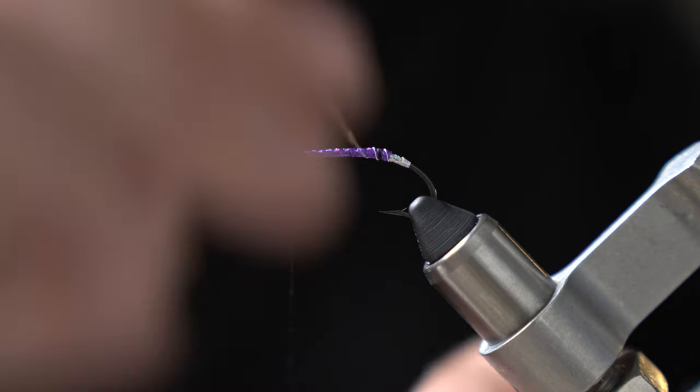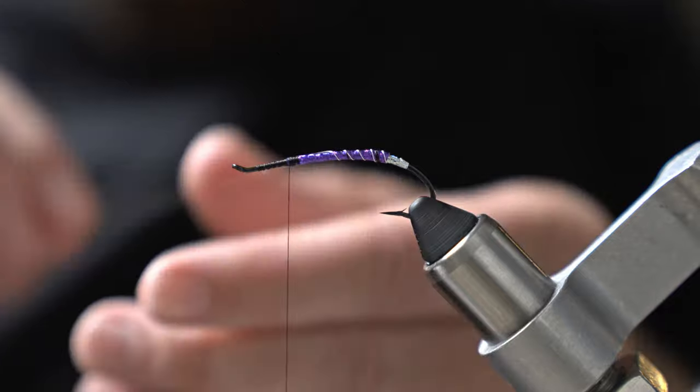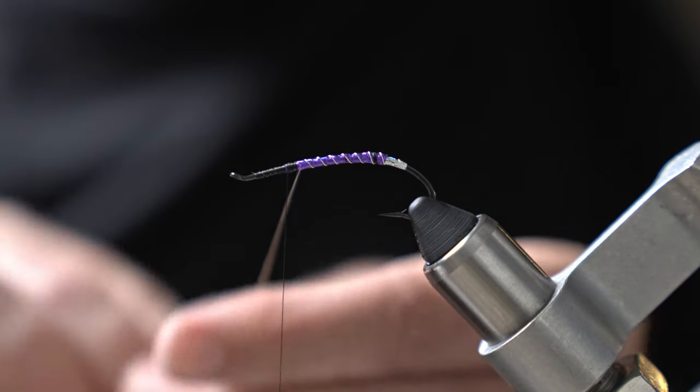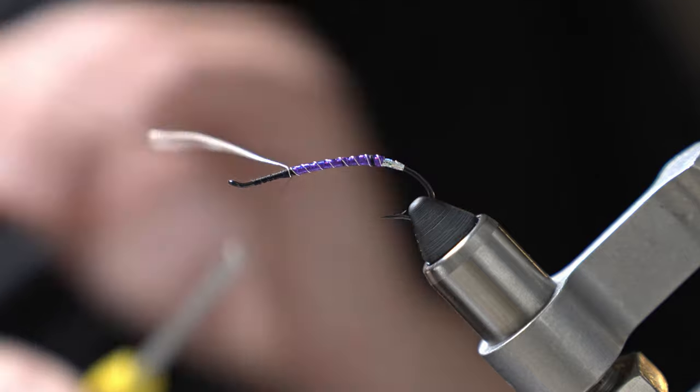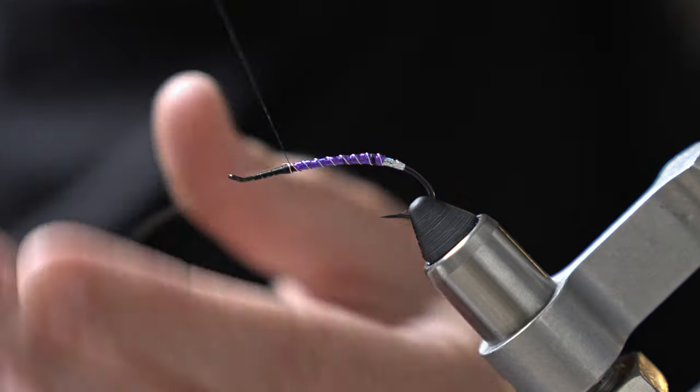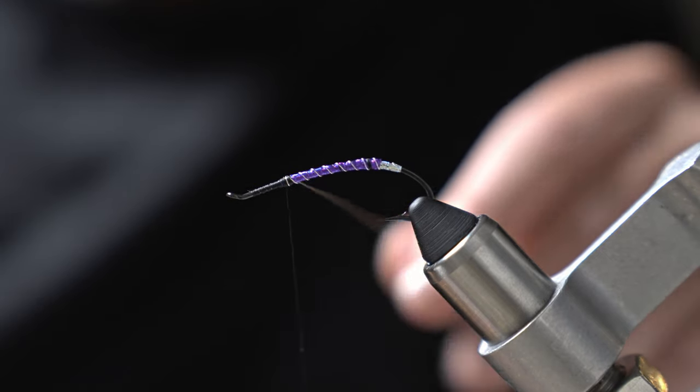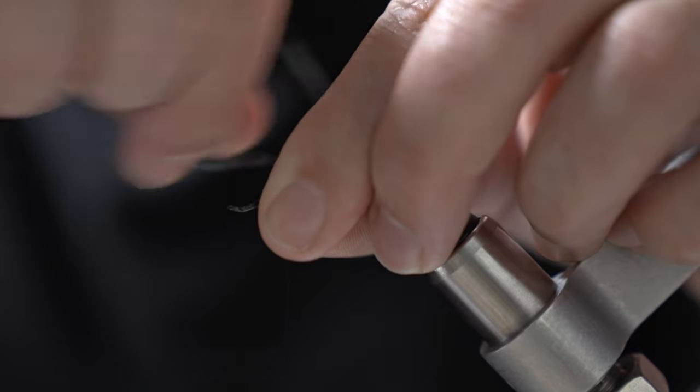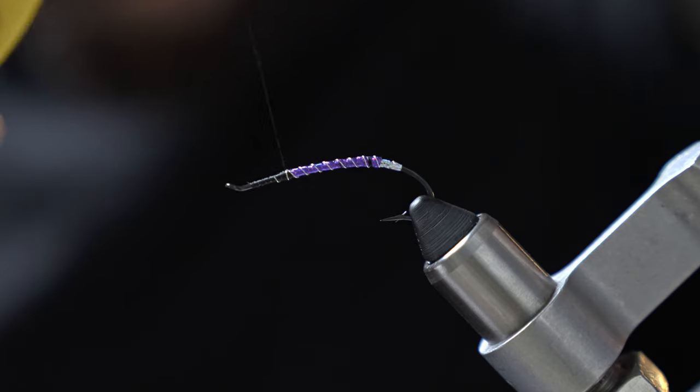And from there we're going to wrap the silver wire up to the front of the hook. Tie that wire off. And I'm not too concerned with keeping this thing clean at the head of it because we're going to cover that with a little dubbing ball. Go ahead and helicopter that wire to break it off.